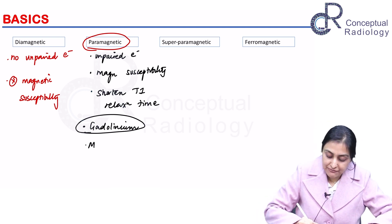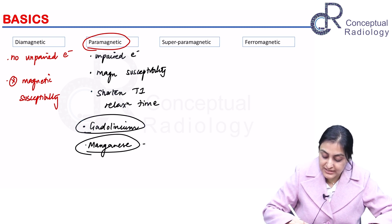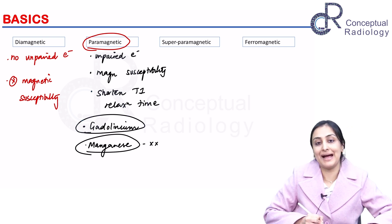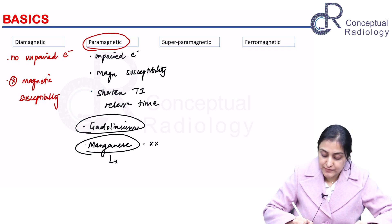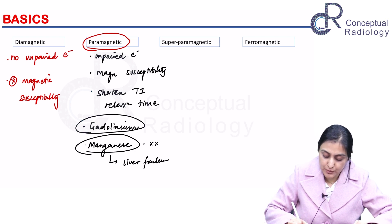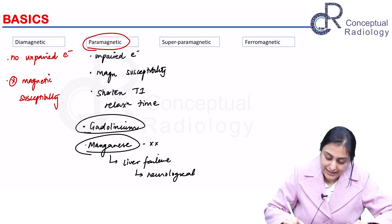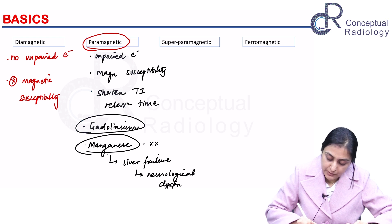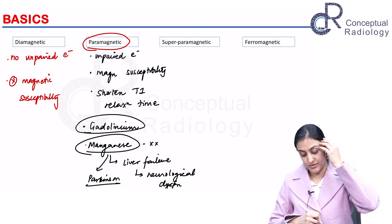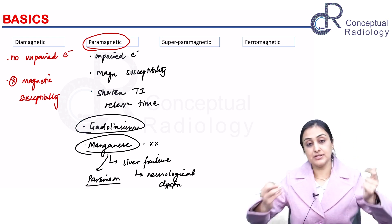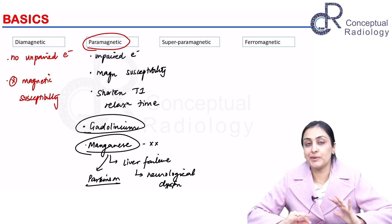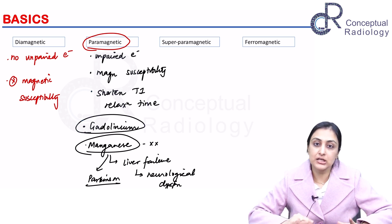We also used to use manganese (Mn2+), but it has now been taken off the market. It was banned because in patients with liver failure, manganese deposits in the brain and causes neurological dysfunction. Manganese has also been linked to the development of iatrogenic Parkinson's disease. If asked, remember it is a paramagnetic compound.